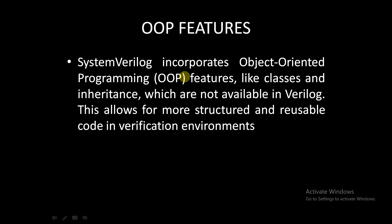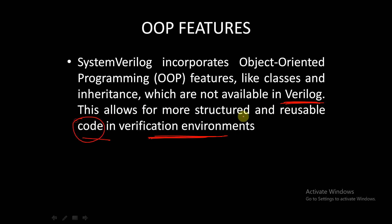SystemVerilog has object-oriented programming features like classes and inheritance which are not available in Verilog, making it a more versatile language. This allows for more structural and reusable code in verification environments. With the help of OOP features, we can actually reuse the code. It makes the code reusable and more structured. We will see how code reusability works in the OOP concept.